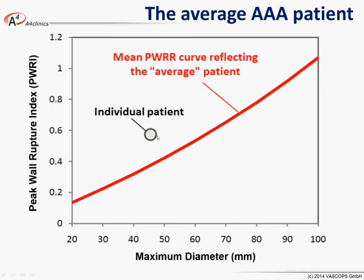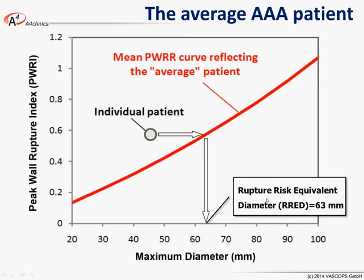However, the individual case can deviate from this average. You can clearly see that a particular individual with a 45 mm aneurysm is at higher risk than the average case. We can also introduce what we call a rupture risk equivalent diameter — RRED — which tells you that although this case has only a 45 mm aneurysm, it is at the same biomechanical risk as the average 63 mm aneurysm. This provides a direct translation of the peak wall rupture risk index into a diameter space, which can be directly integrated into the clinical environment.